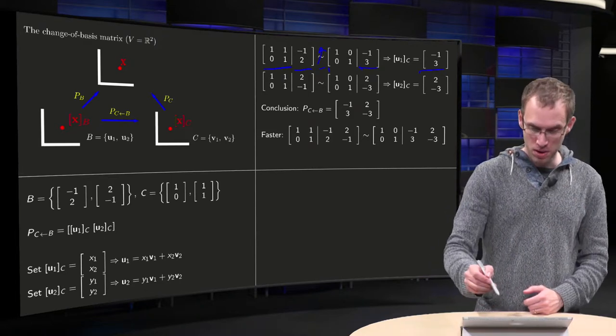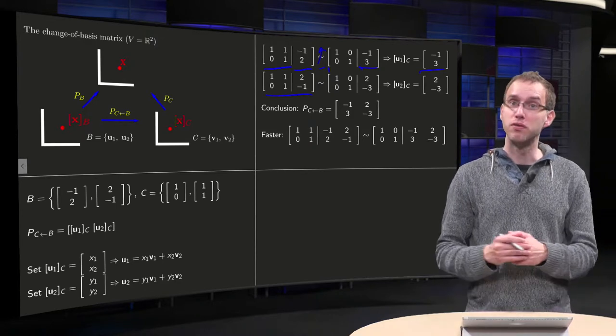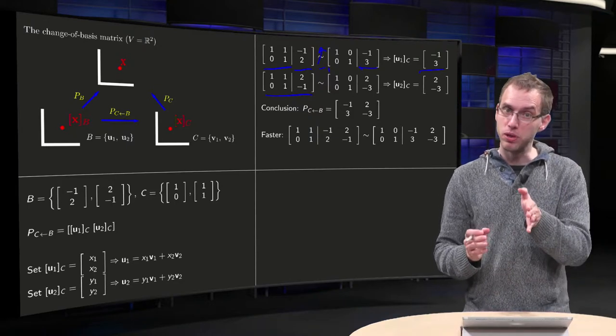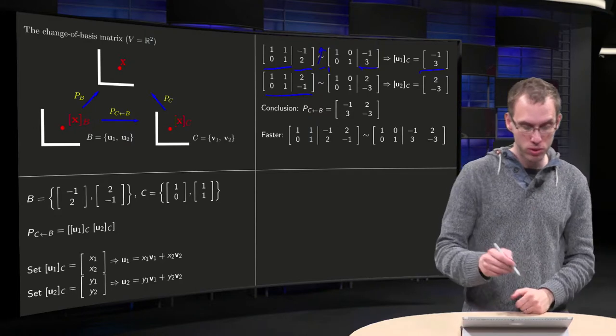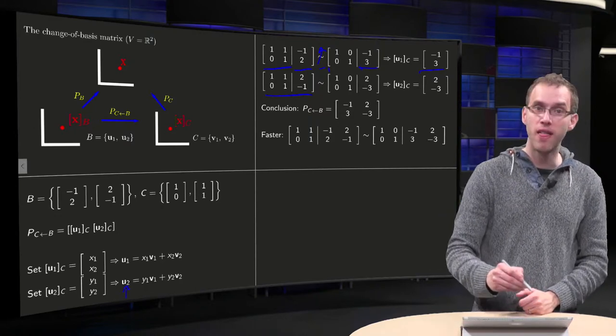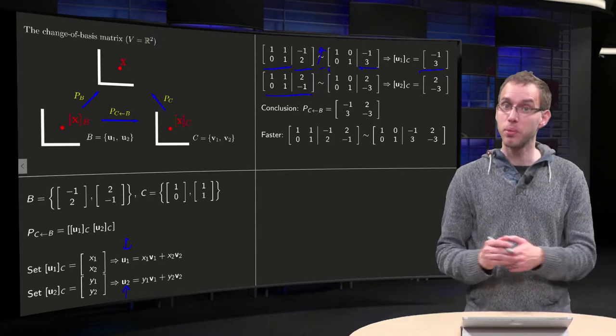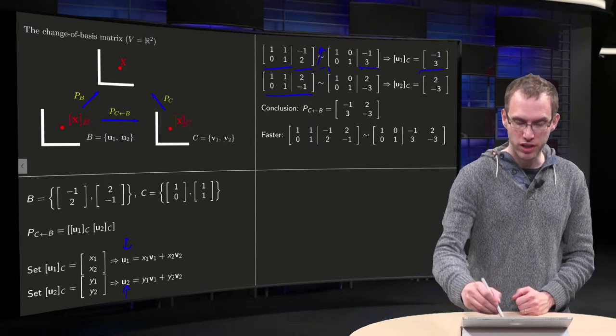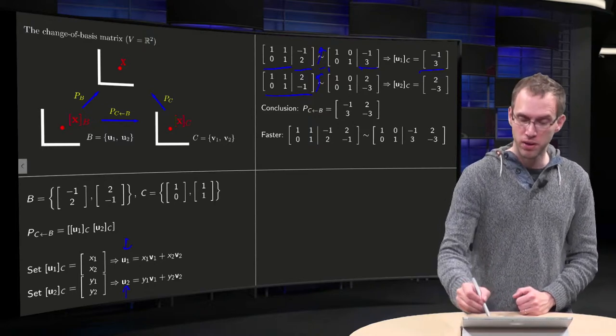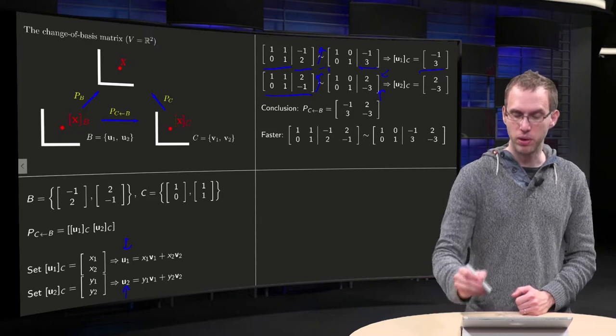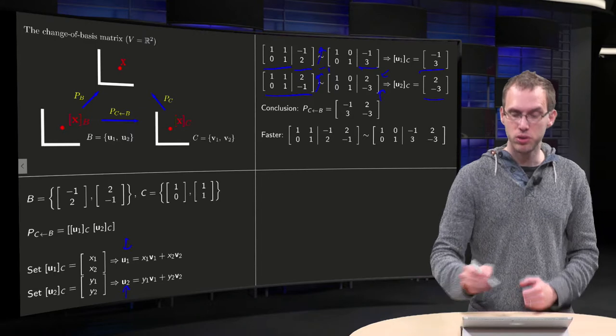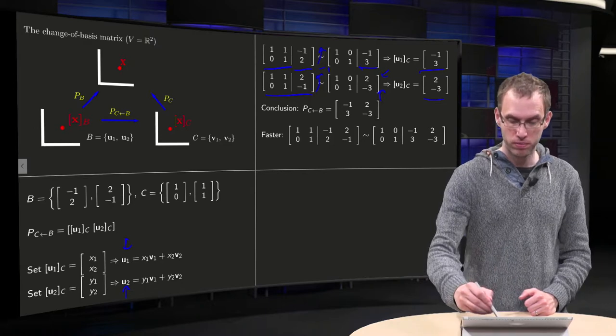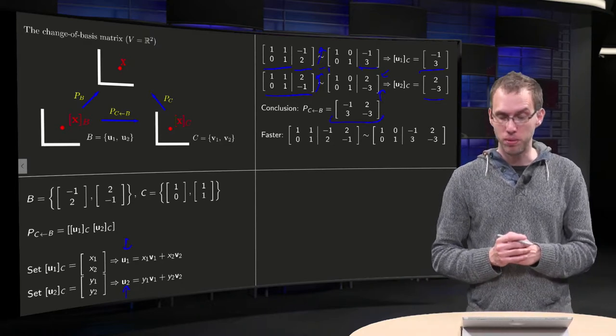Same row reduction, but now with a different right hand side to find your y1 and y2. Again, you plug v1 and v2 into matrix, but now you augment with u2, because the only thing which changes is the right hand side here. In the first problem it was u1 and in the second problem it is u2, so that is what changes, only the right hand side. So you do the same row reduction step, and then you read off your y2 equals minus 3 and your y1 equals 2. So your u2 in c equals 2 minus 3. So there you have your p from b to c, minus 1, 3 in the first column, 2 minus 3 in the second column.